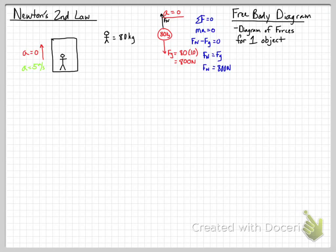Anytime an object is at rest, the net force is 0, and you can double check it by doing MA equals Fn minus Fg and going through the process. It all works out nicely. Now we're going to do one where the elevator is accelerating upwards at 5 meters per second squared.